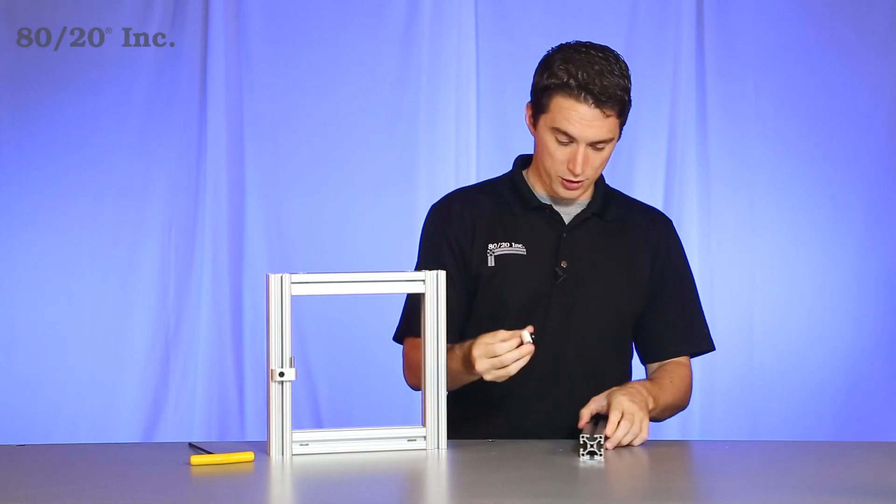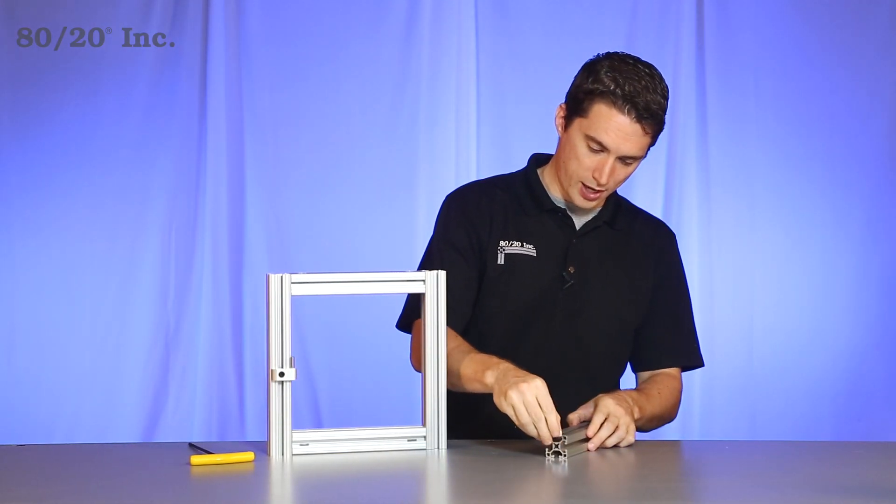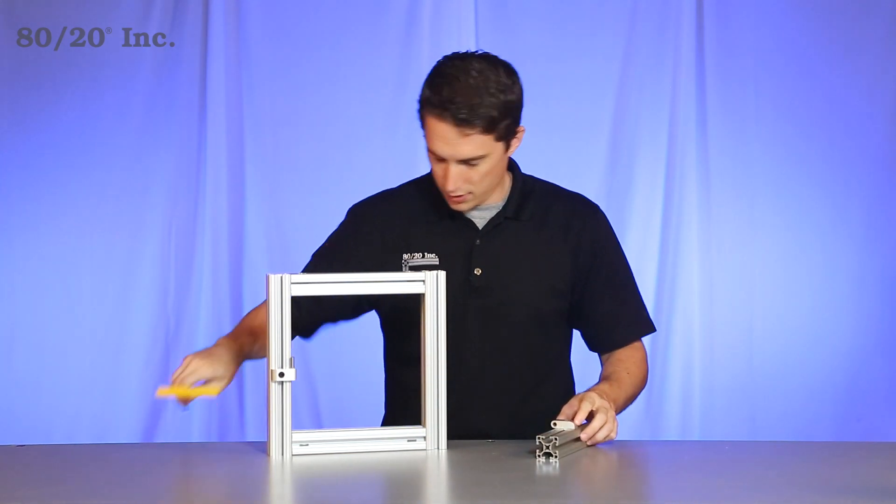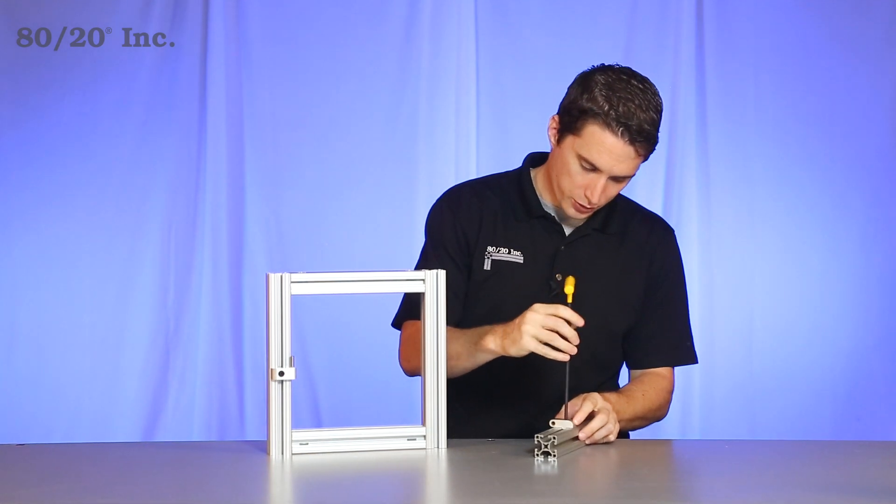We'll grab the other half of the hinge and slide it right into the open T-slot of this other profile. Get that on there, we'll tighten that down.